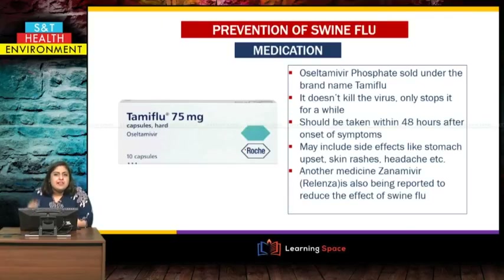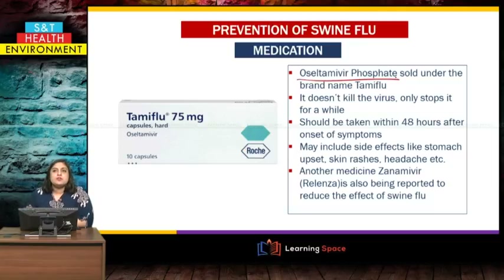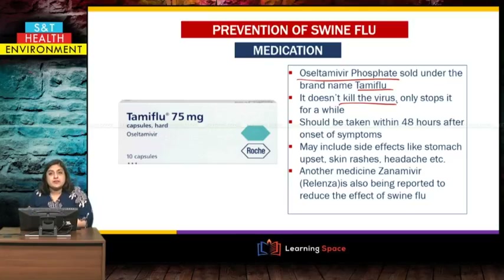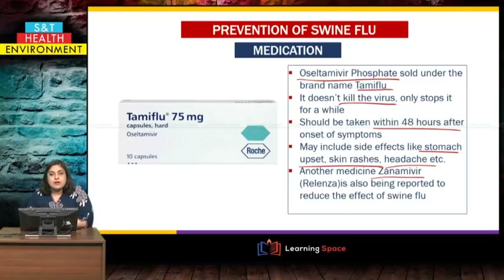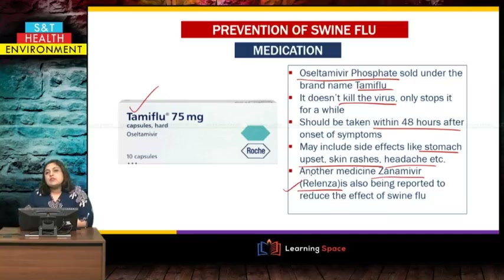How can we prevent swine flu? There is a medicine called oseltamivir phosphate, also sold under the brand name Tamiflu — a very common medicine given to persons infected with swine flu. Remember, it does not kill the virus; it only stops viral spread for a while in your body and should be taken within 48 hours after symptoms start. Side effects include stomach upset, skin rashes, and headache. Another medicine, zanamivir — brand name Relenza — is also reported to reduce the effect of swine flu. Remember Tamiflu and Relenza as the two medicines for swine flu.